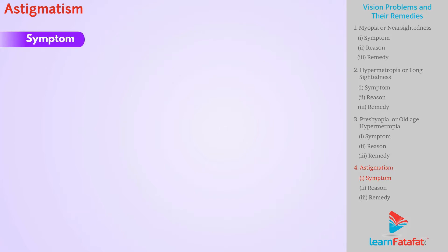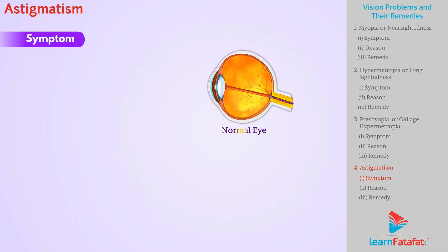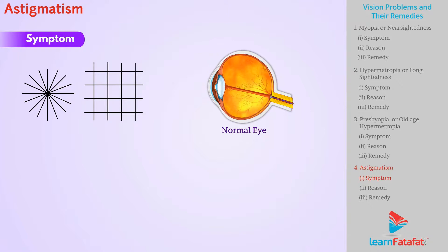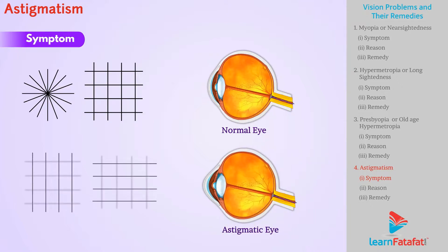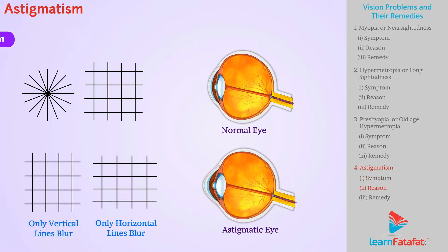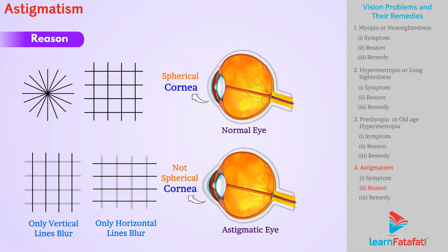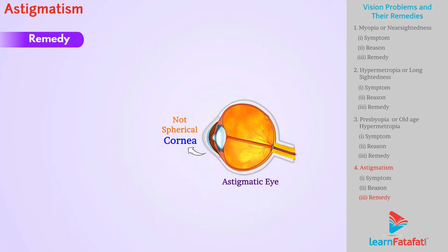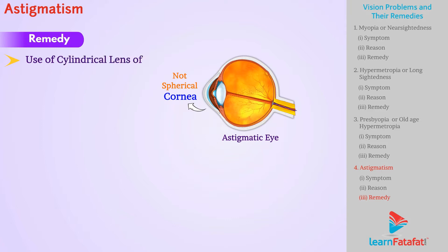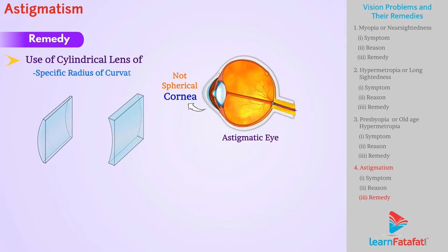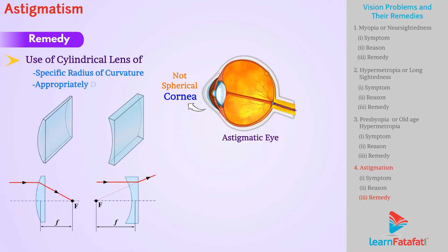Astigmatism: for a normal eye, all lines are visible with equal intensity. However, for an astigmatic eye, there is a variation in intensity of different lines. This defect occurs when the cornea is not spherical in shape. Remedy: with the help of a cylindrical lens of specified radius of curvature and appropriately directed axis, astigmatism can be corrected.